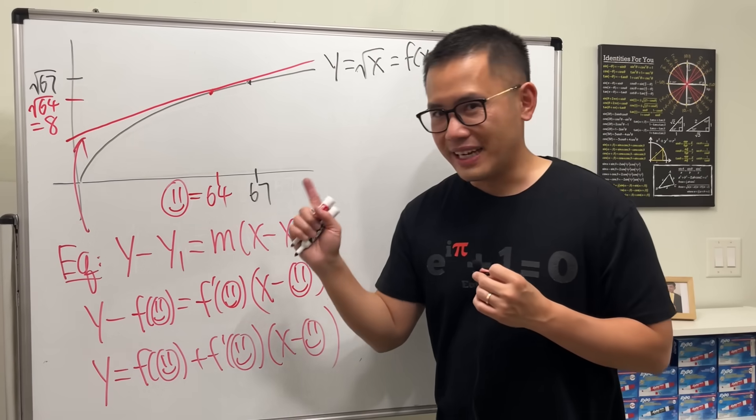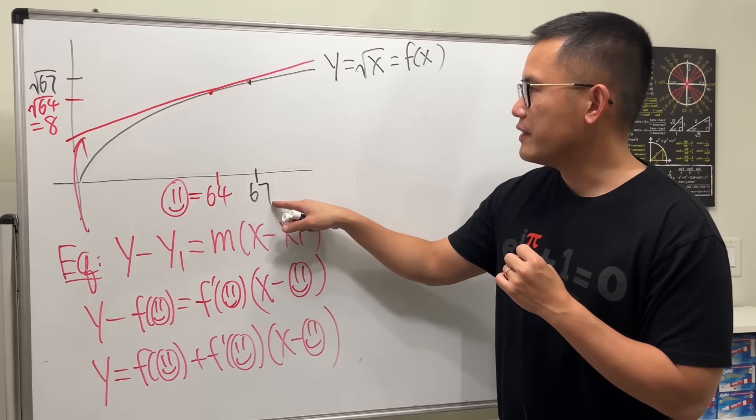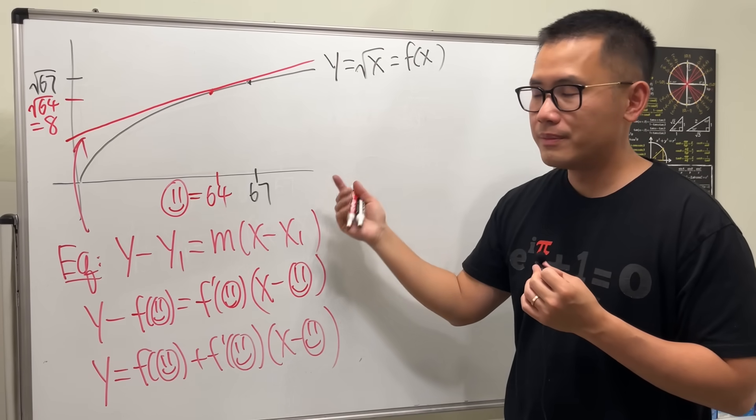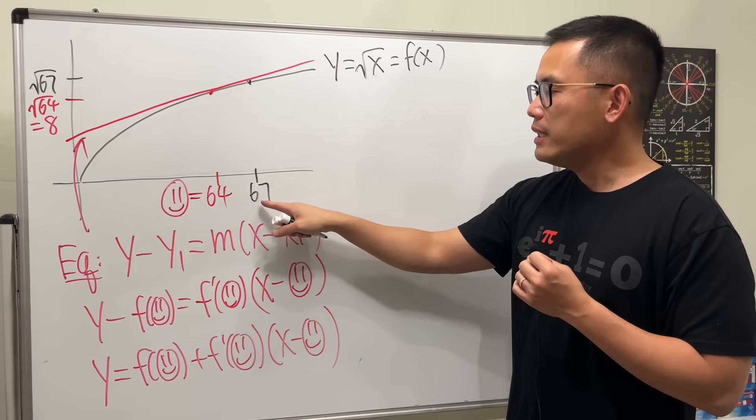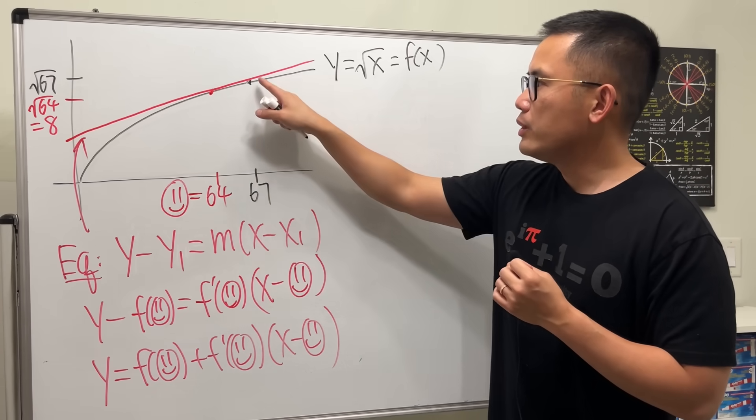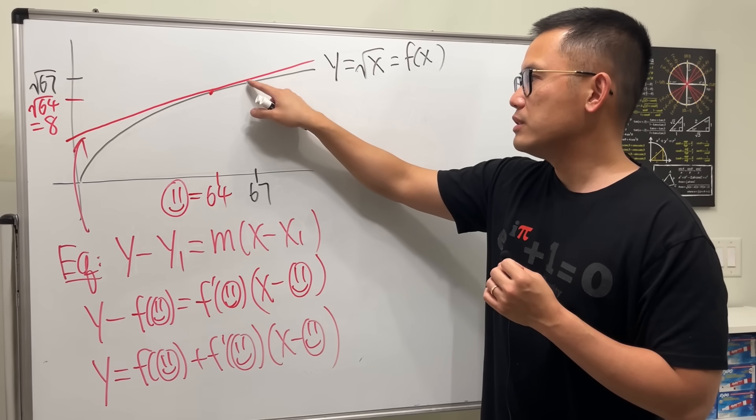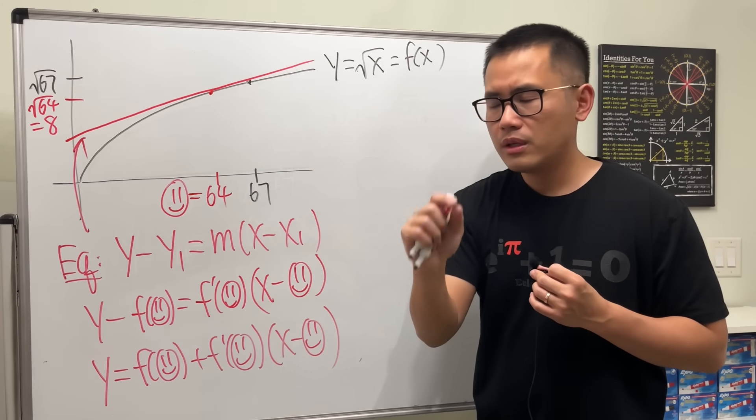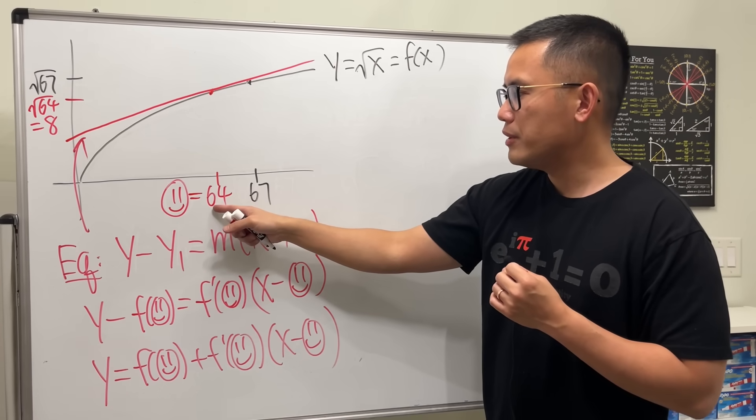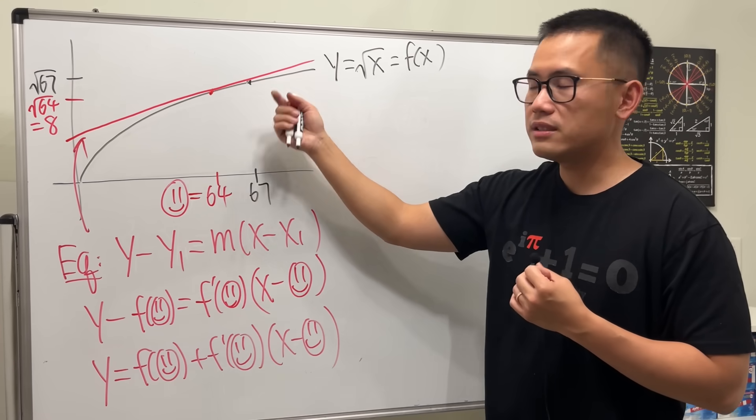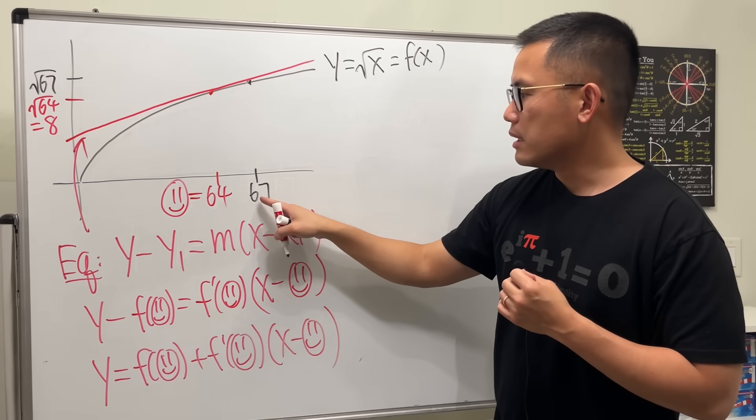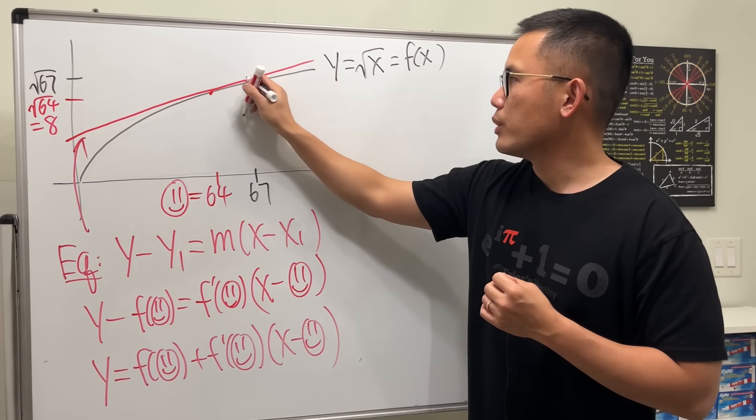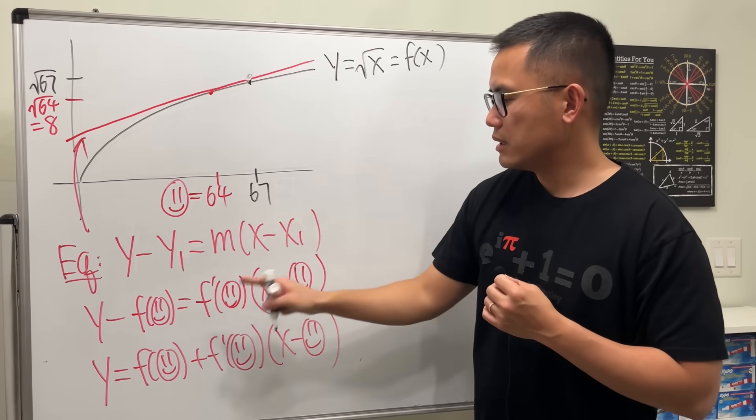Now, here's the idea. Instead of plugging 67 into square root of x, which we wouldn't be able to figure out. That's our original function. Why don't we plug in 67 into the tangent line equation? Because as you can see, the gap between the curve and the line, it's pretty small. As long as you have a good happy face number, then this will work out really nicely. So we are plugging 67 into the tangent line equation, which is this right here.